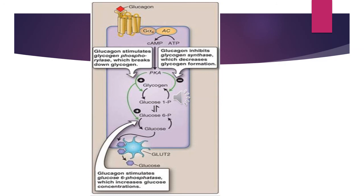Glucose-6-phosphatase is another key enzyme in this pathway. GLUT2 is the transporter that releases glucose into the blood, for the maintenance of normal blood glucose levels.